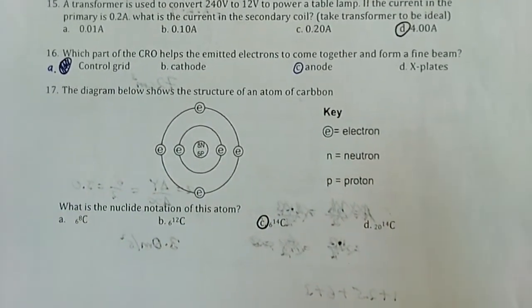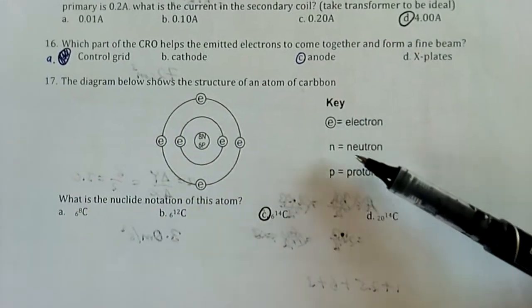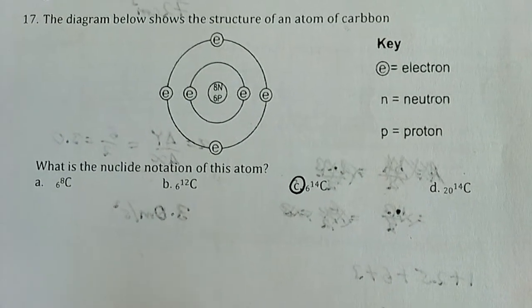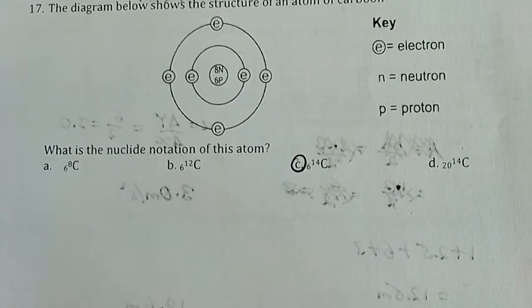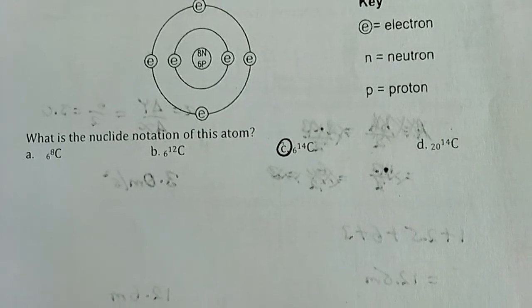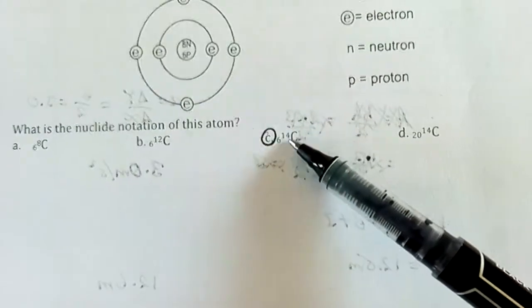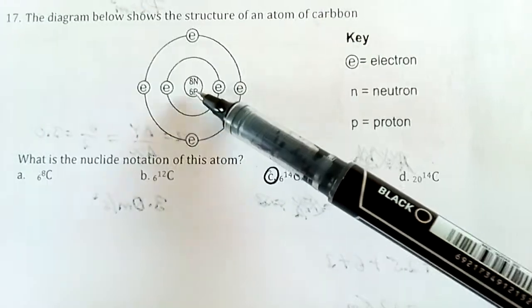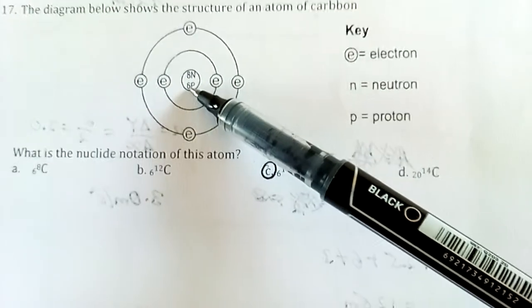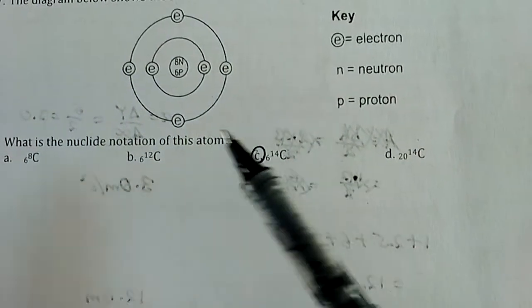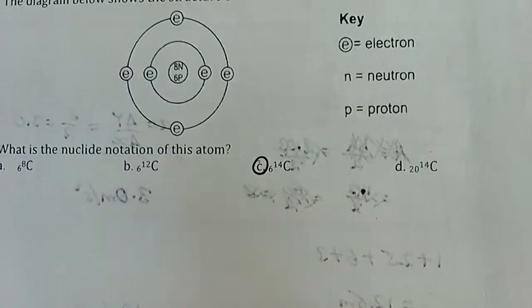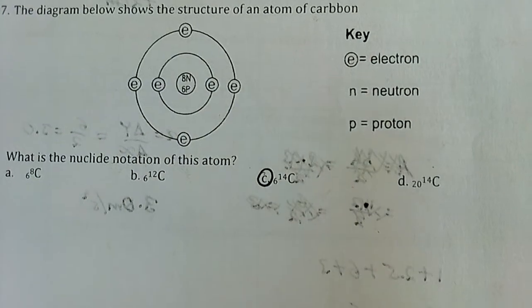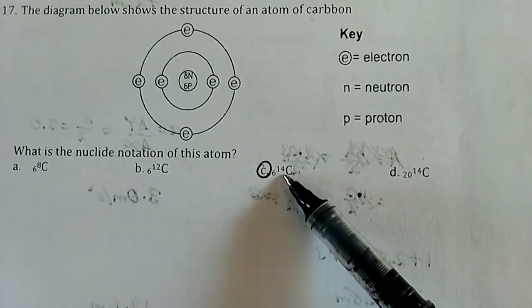Question 17: The diagram shows the structure of an atom of carbon. What is the nuclide notation of this atom? The nuclide notation is writing a chemical formula like it appears on the periodic table, with the mass and atomic number. The mass comes from the nucleons: 8 neutrons and 6 protons. When you add these, they give 14. The electrons—1, 2, 3, 4, 5, 6—confirm that the number of protons equals the number of electrons, meaning the atom is electrically neutral. The answer is ¹⁴₆C. That's the nuclide notation of this atom.